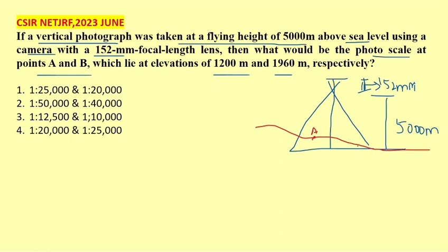And here we are getting our point - 1200 - sorry, consider this as B and suppose this is our A. A is at 1200 and B is at 1960.